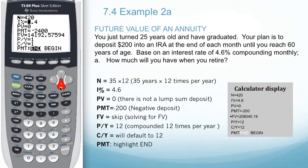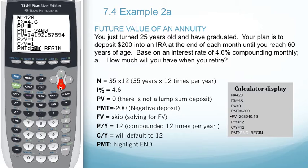Arrowing down to the interest rate, we have an interest rate of 4.6. We leave the present value as zero as we are not making a lump sum deposit. The payment in this case is going to be negative 200, because this is the amount we're going to be paying monthly.